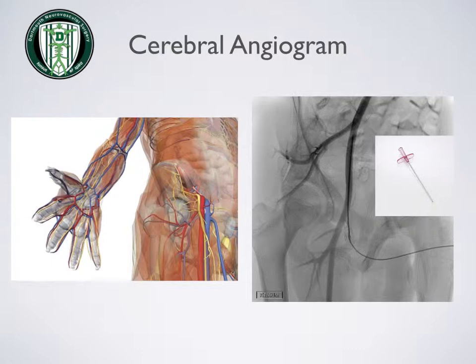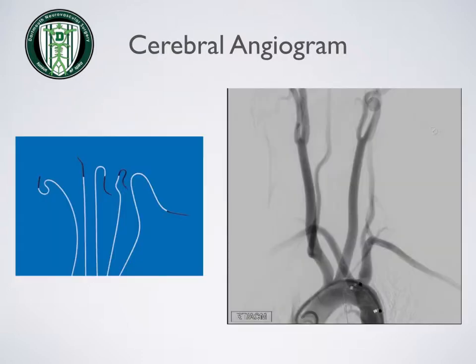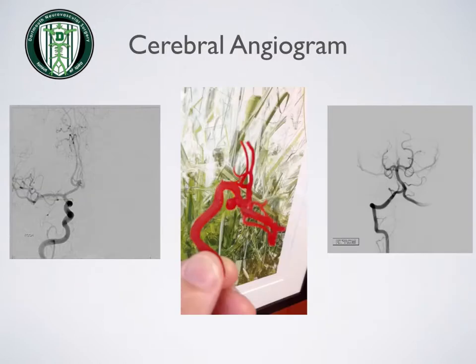On the right is a picture of a catheterization where a small needle is placed in the artery to allow us to advance catheters up into the blood vessels that lead to the brain. This allows us to get a very good look at the circulation of the brain.